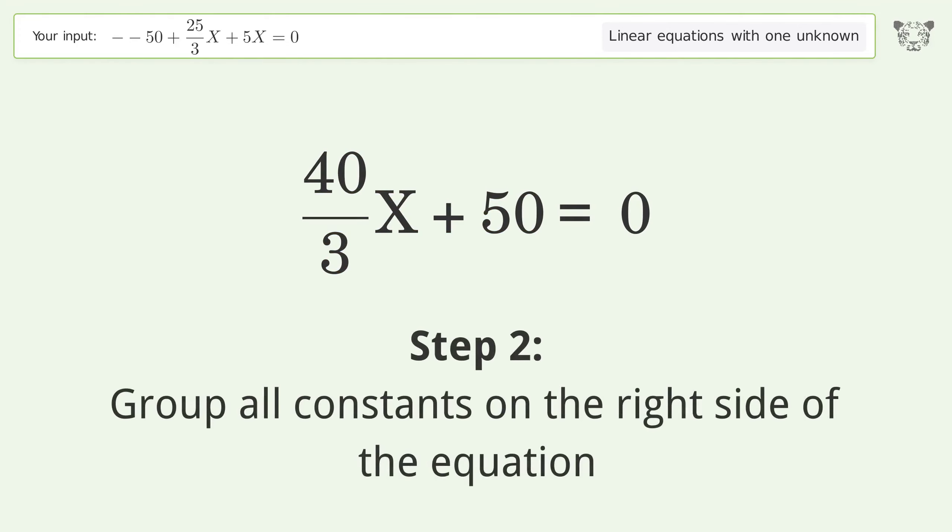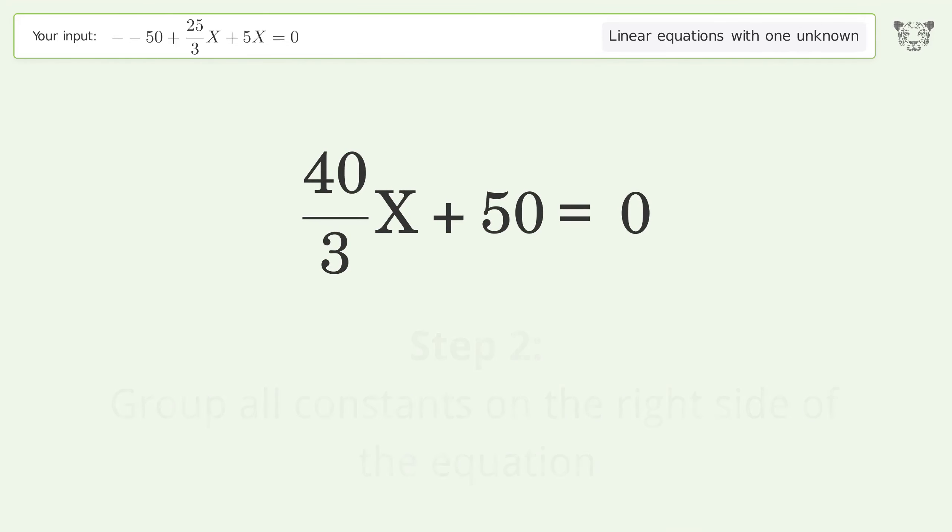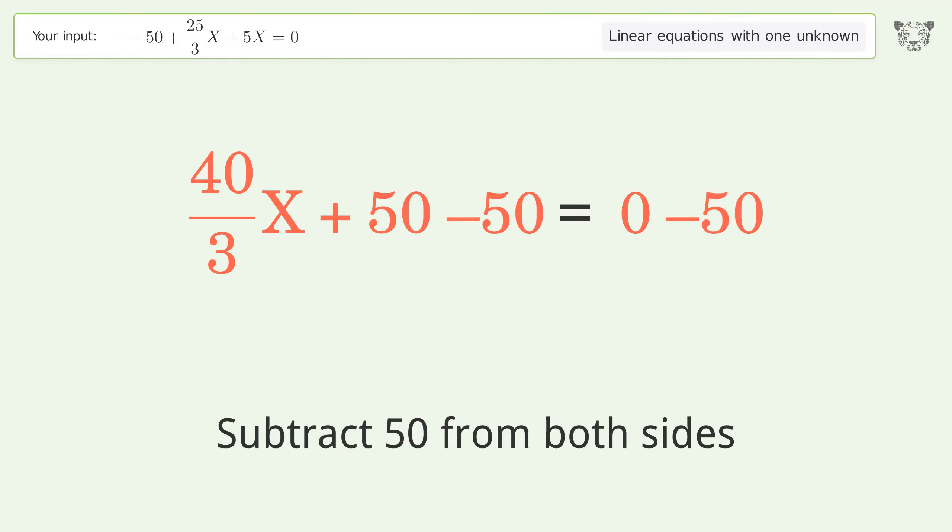Group all constants on the right side of the equation. Subtract 50 from both sides. Simplify the arithmetic.